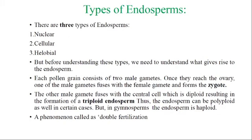Out of the two male gametes, one male gamete fuses with the female gamete to form the zygote. The other male gamete fuses with the central cell, which is diploid, resulting in the formation of triploid endosperm. Thus the endosperm can be polyploid as well in certain cases. In gymnosperm the endosperm is haploid, whereas in angiosperm the endosperm is triploid.